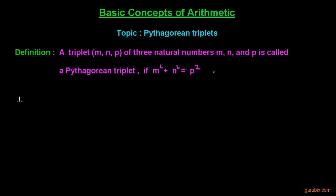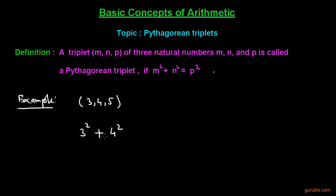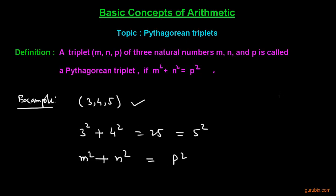Let me give you some examples to make you understand in a better way. We have 3, 4, 5 — this is a Pythagorean triplet. You can check it: the square of 3 added to the square of 4 gives us 25, and 25 is the square of 5. So the condition m square plus n square equals p square is fulfilled, and this is a Pythagorean triplet.